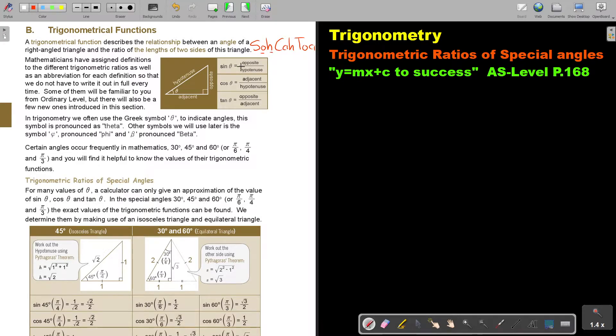In trigonometry, we often use the Greek symbol theta to indicate angles. This symbol is pronounced as theta. Other symbols we will use later include phi, pronounced phi, and beta, pronounced beta.